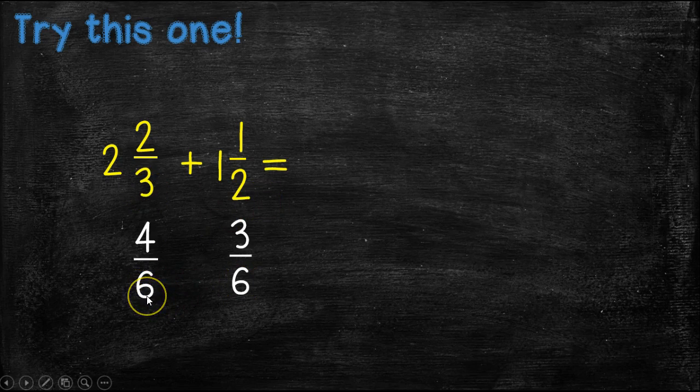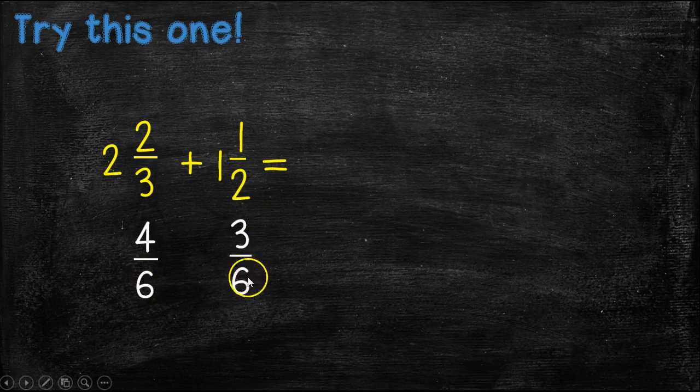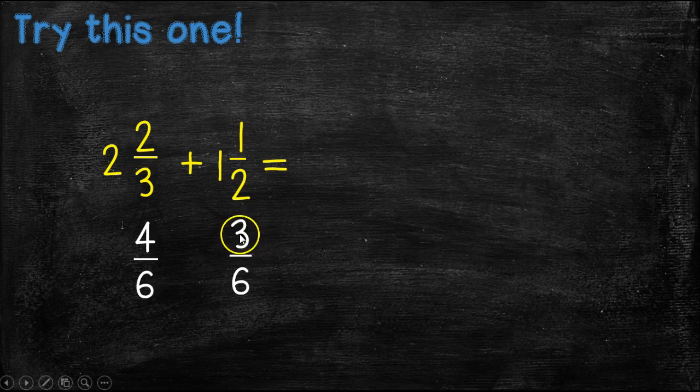It doesn't matter if you use the wedding cake strategy or any of those other strategies that I taught you in topic nine, but if you need to go back and refresh your memory on how to find the least common denominator, you can go back and watch that video. So six is our least common denominator, so whatever we did to the denominator, we had to do to the numerator.